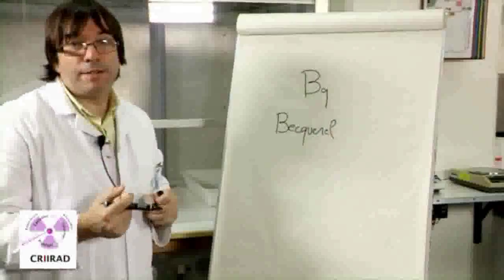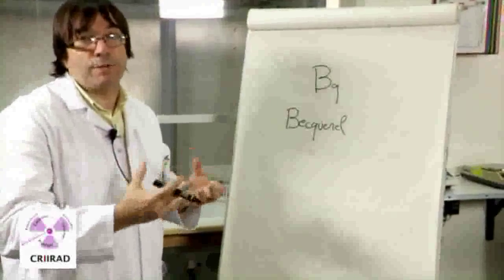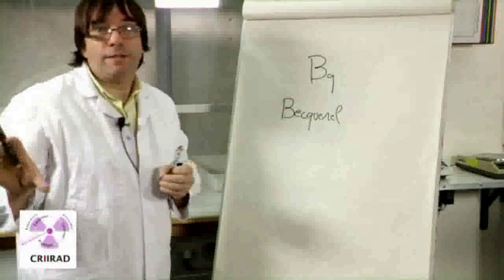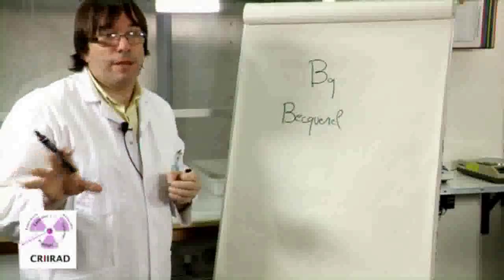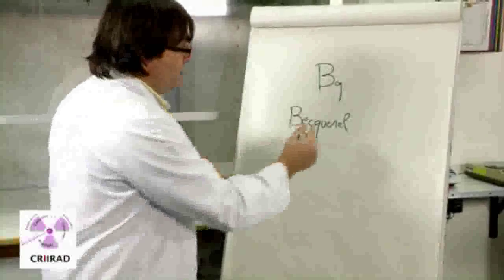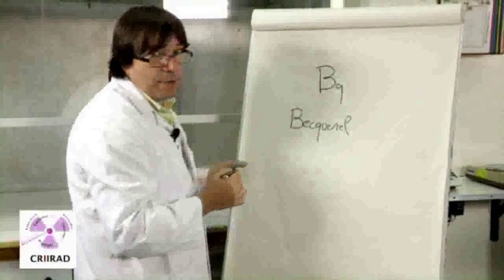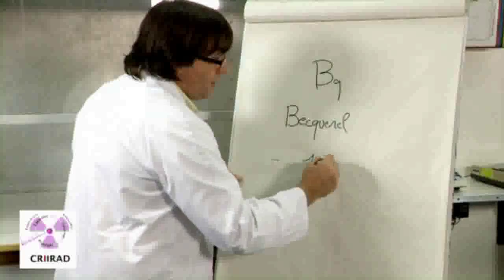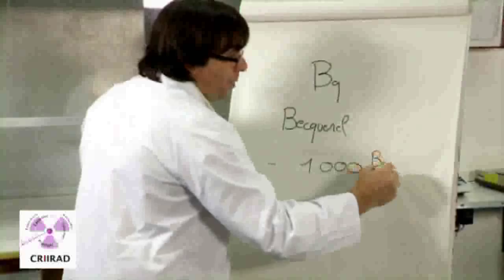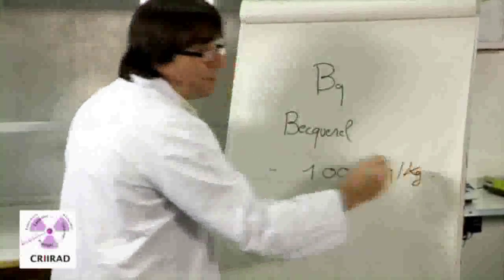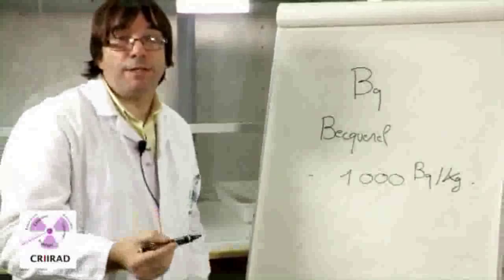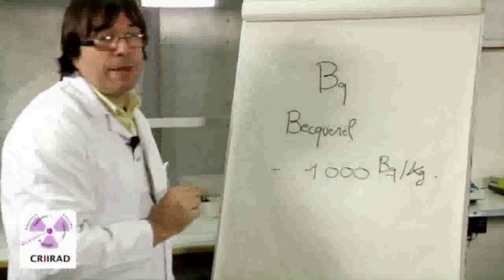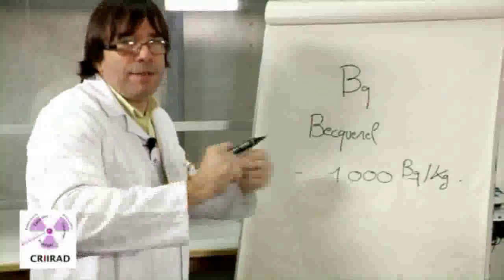One Becquerel means that you have one radioactive atom that is disintegrating and throwing away radiation, like the radiation we measured. So you will speak about Becquerel per kilogram — for example, if you have 1000 Becquerel per kilogram in a sample of mushrooms or spinach, it means that at each second, 1000 atoms are disintegrating and emitting radiation.